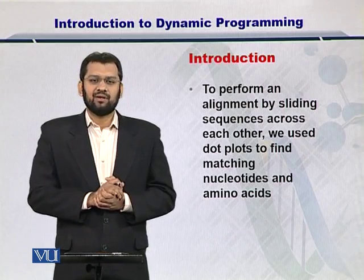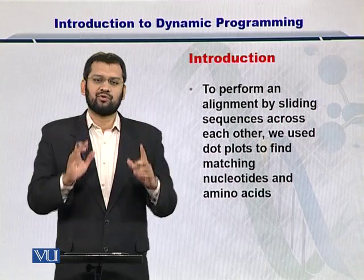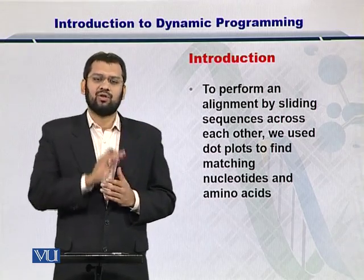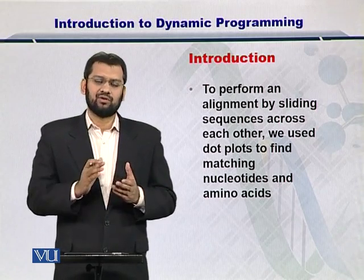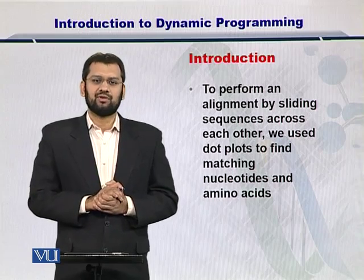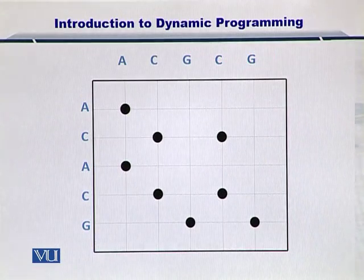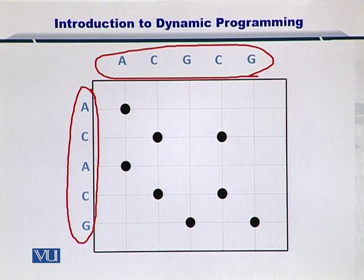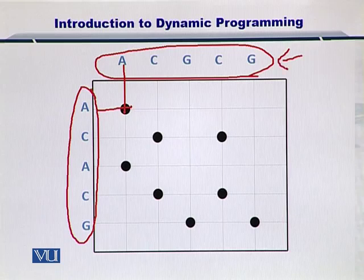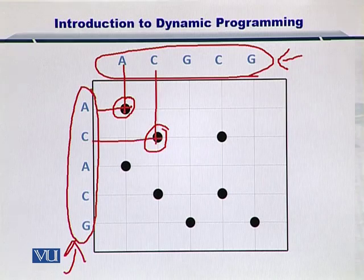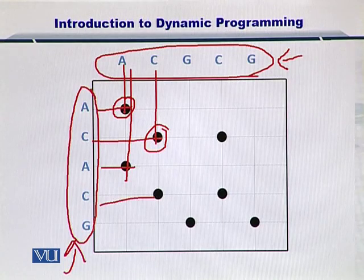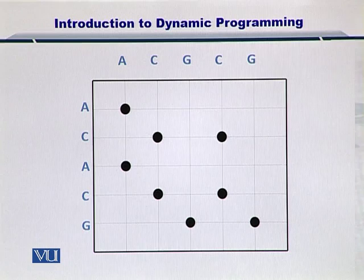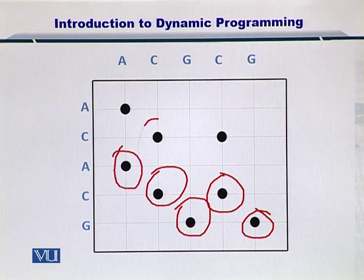To perform alignment, we used a dot plot, in which a matrix was created with one sequence written on top and the other on the left side. For each one of the matching nucleotides or amino acids, we placed a dot on that position. Here is the matrix — the sequences are written on top and on the left, and the matching nucleotides are indicated by these dots. For example, C matched with C, A matched with A, and so on.